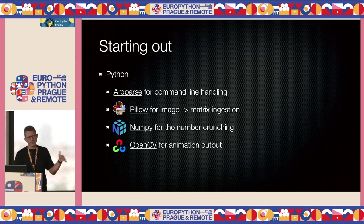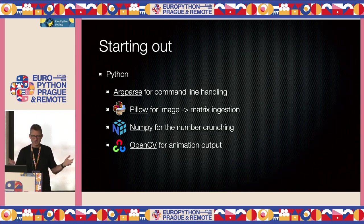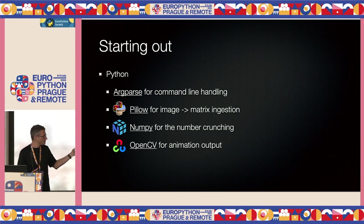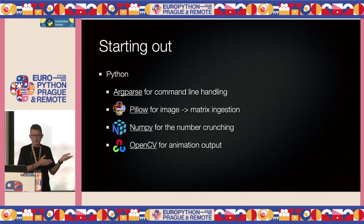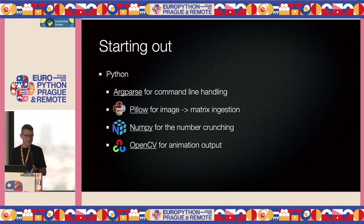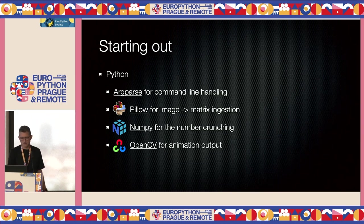After a few false starts I settled on Python. Python is ideal for this kind of project — it has the set of libraries and capabilities that make it very easy to bootstrap. The main libraries I used were Pillow for image processing, which helped me load an image and make it into something mathematical — a matrix — NumPy for the number crunching, and OpenCV for animations which you're going to see in this talk.